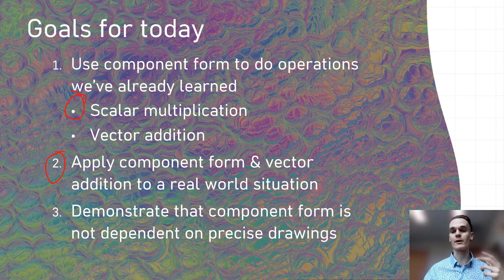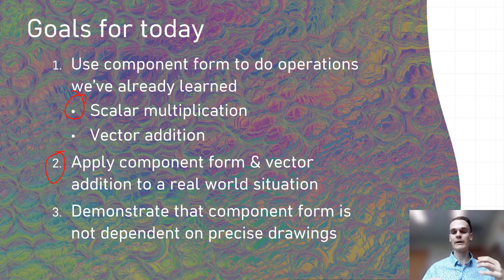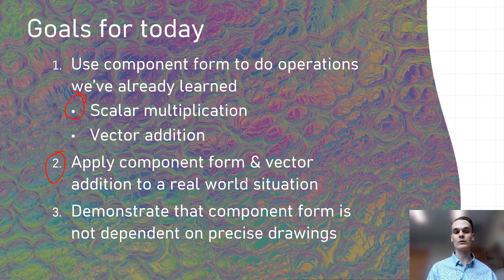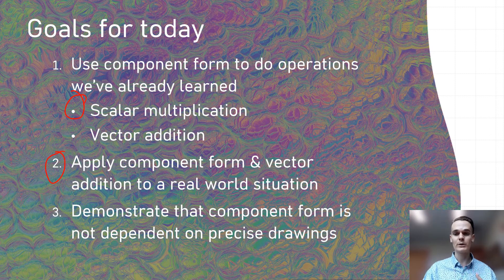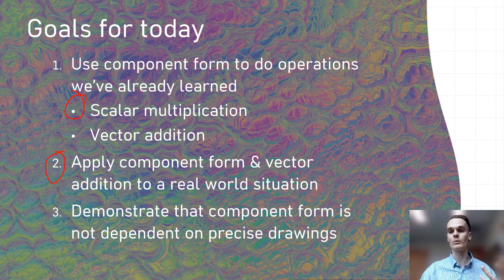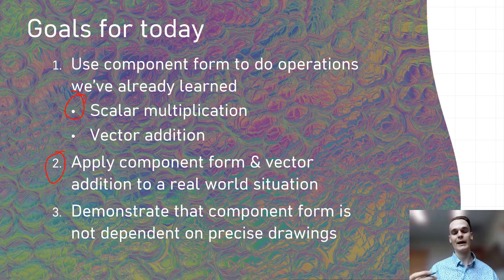Things like scalar multiplication. The only vector operation we've learned so far is vector addition, and the only way we've learned how to do vector addition is graphically — the tip-to-tail method. Since we're drawing these things by hand, we're going to make mistakes. Graphical tip-to-tail vector addition is a good way to double-check your work, but it shouldn't be the only tool in our toolbox. Vector component form is going to make us much more efficient and accurate at doing operations that so far we've only been doing graphically.